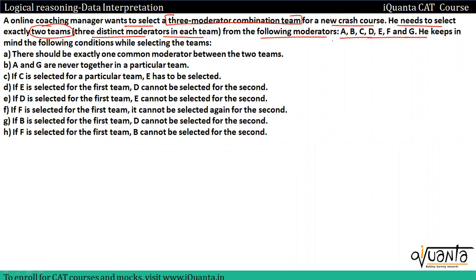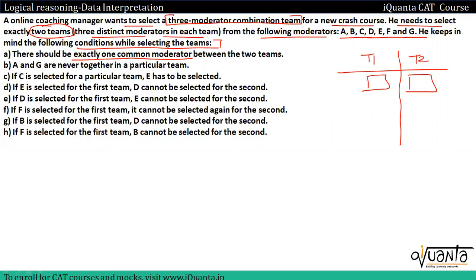He keeps in mind the following conditions while selecting the teams: There should be exactly one common moderator between the two teams T1 and T2. A and G are never together in a particular team. C is selected for a particular team, E has to be selected. If E is selected for the first team, D has to be selected for the second team.